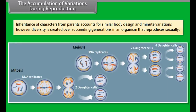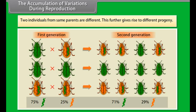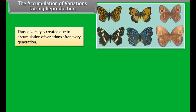Inheritance of characters from parents accounts for similar body design and minute variations; however, diversity is created over succeeding generations in an organism that reproduces sexually. Two individuals from the same parents are different, and this further gives rise to different progeny.